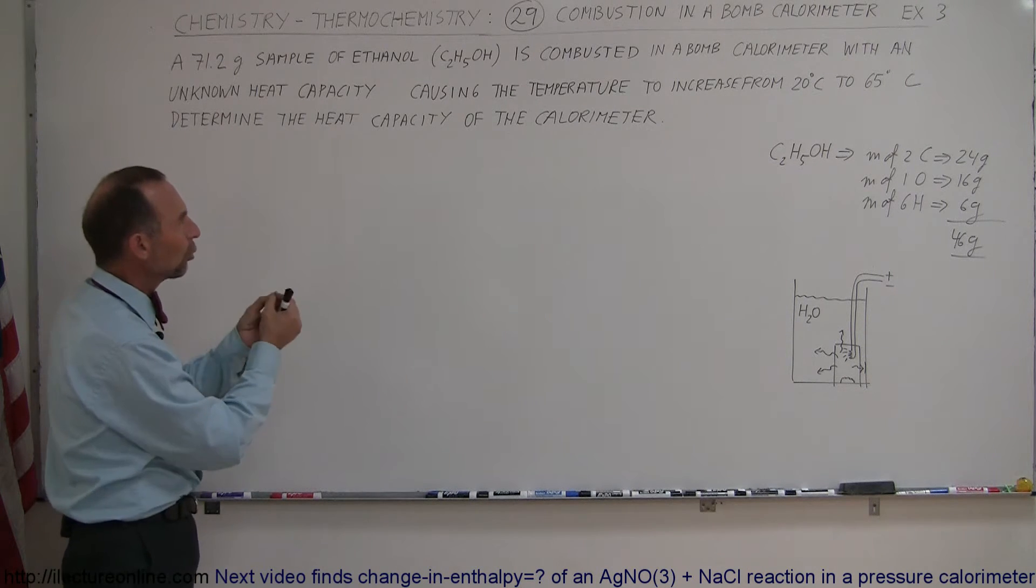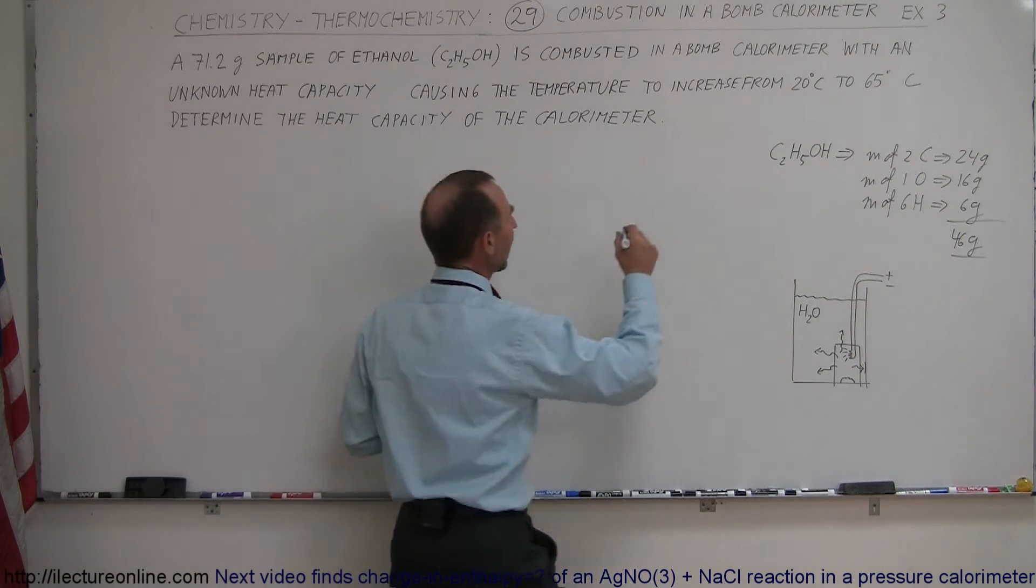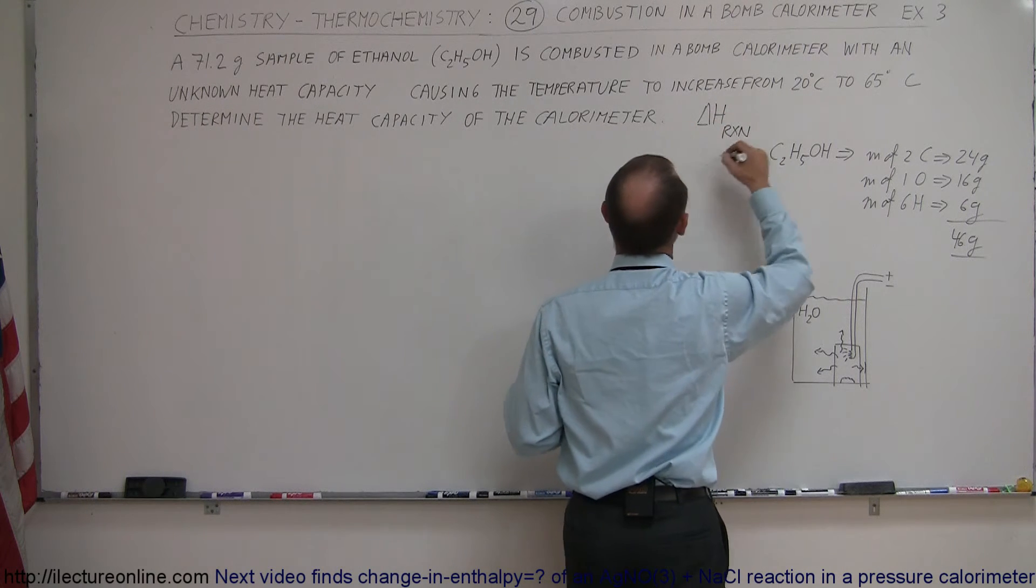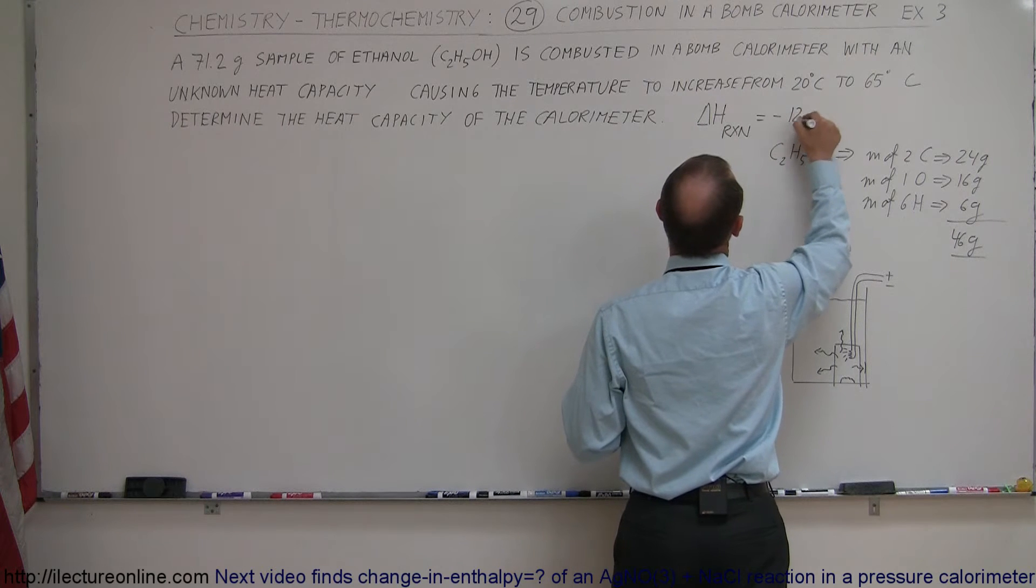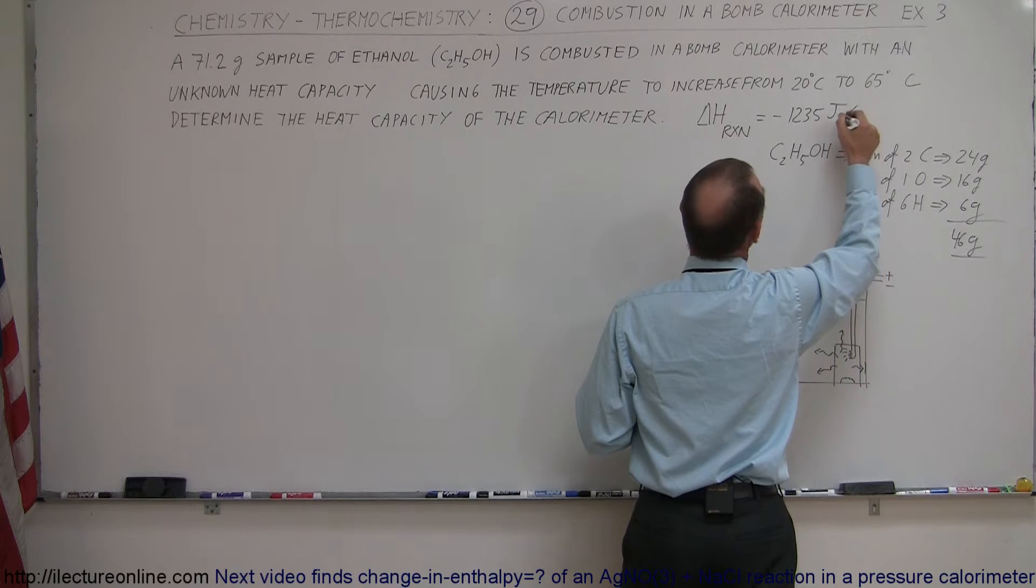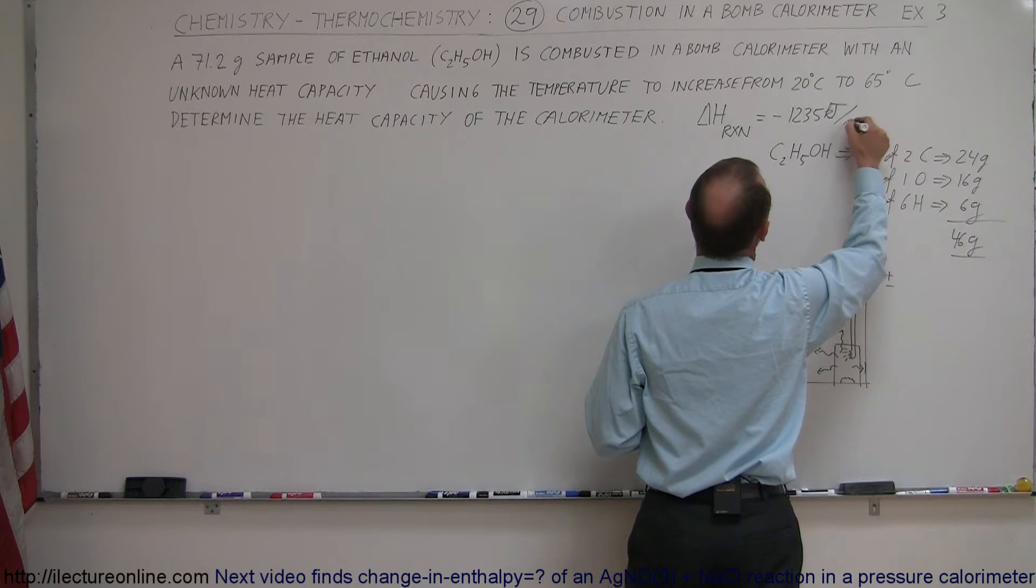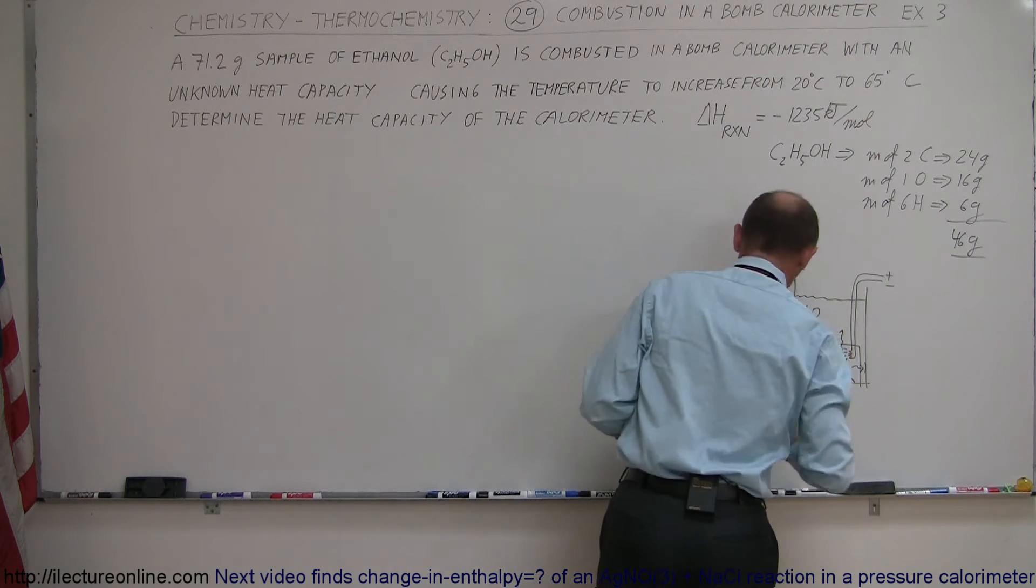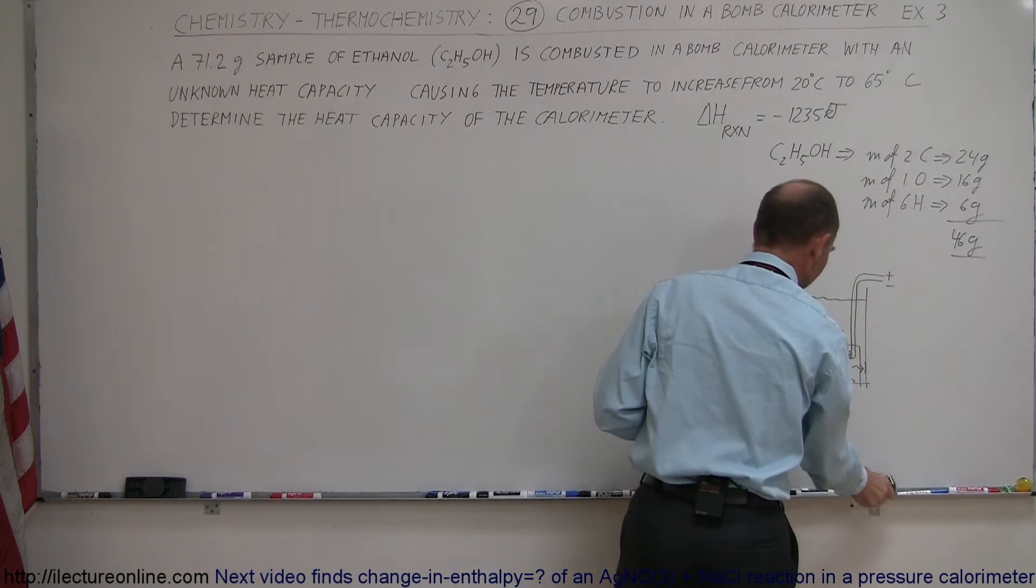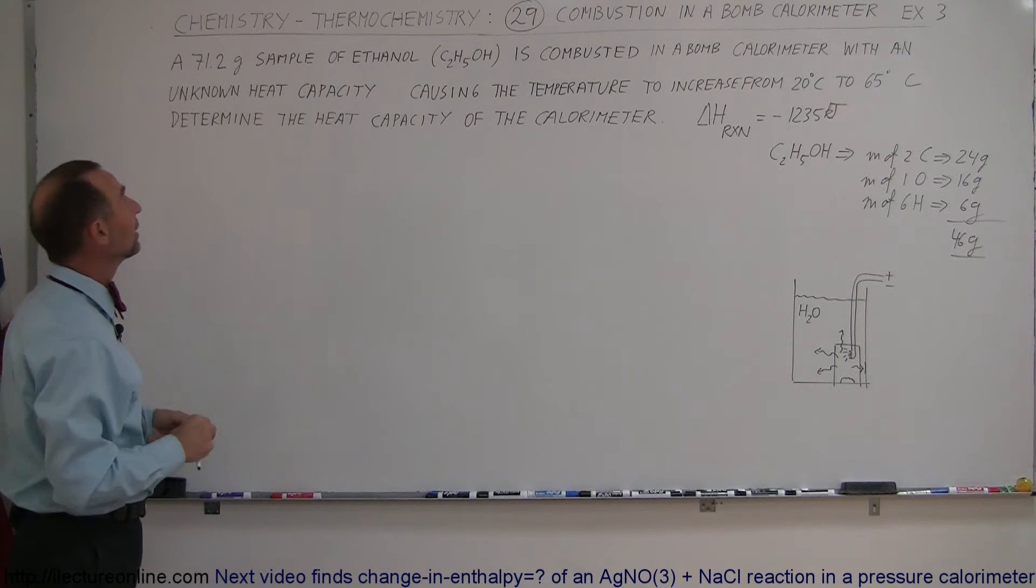So what we're doing is we're taking a known substance with a known heat enthalpy. So the enthalpy of the reaction of ethanol is equal to about minus 1235 kilojoules per mole or per reaction. We can just simply write it like that, saying that's the change in the enthalpy by doing a reaction of one mole of the substance.